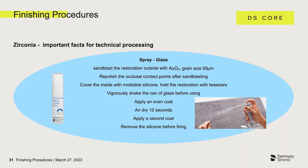The glaze spray must be thoroughly mixed by shaking the spray can for one minute. An even thin layer is applied to the surface by short, even sprays. The first coat is allowed to air dry for about 10 seconds, then a second coat is applied in the same way and also dried for 10 seconds. A slightly frosty surface remains with a glaze layer that is not too thick. The silicone is then removed from the inner surface, and the restoration is held at the proximal contacts with diamond tipped tweezers.